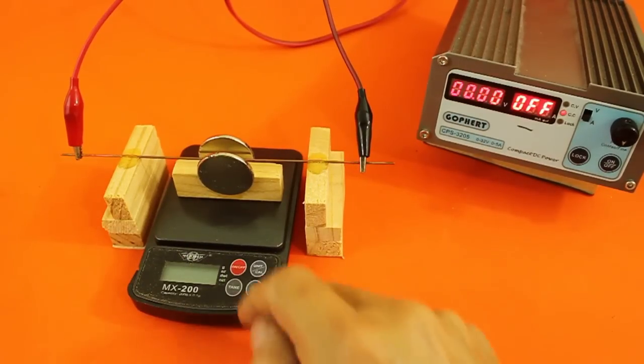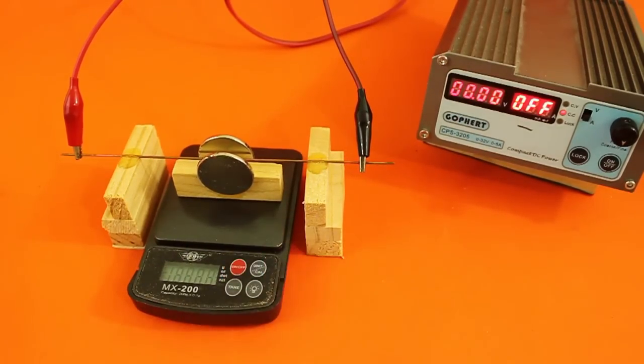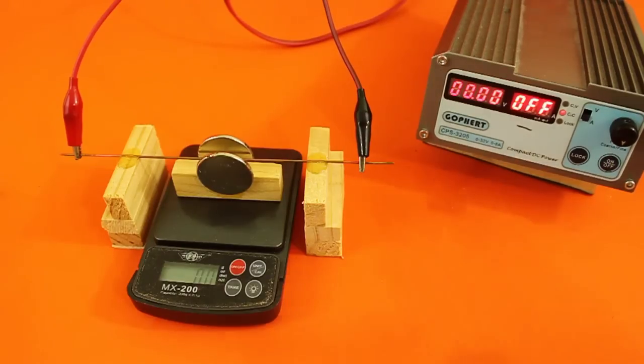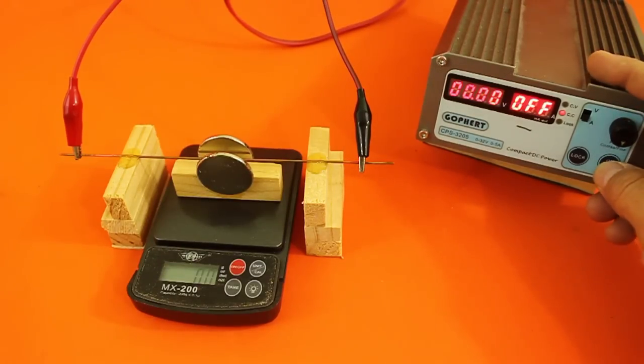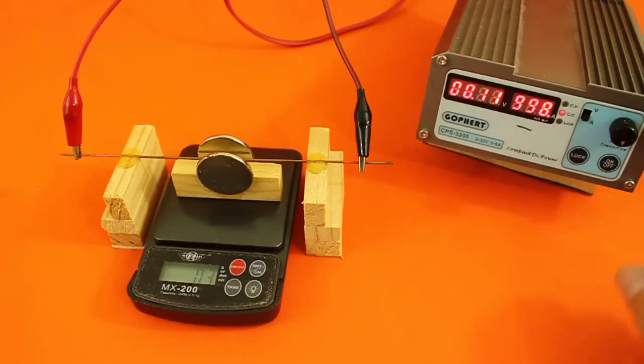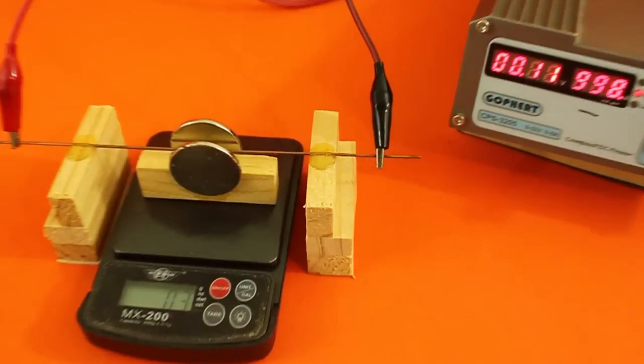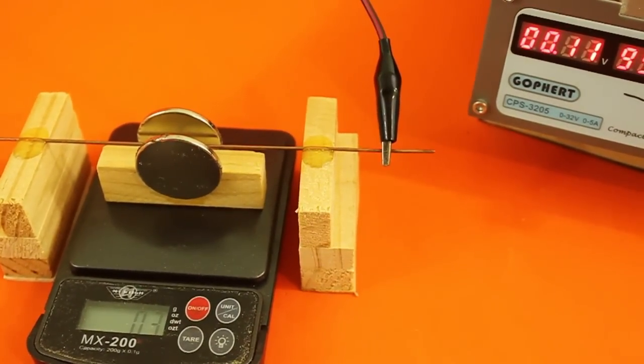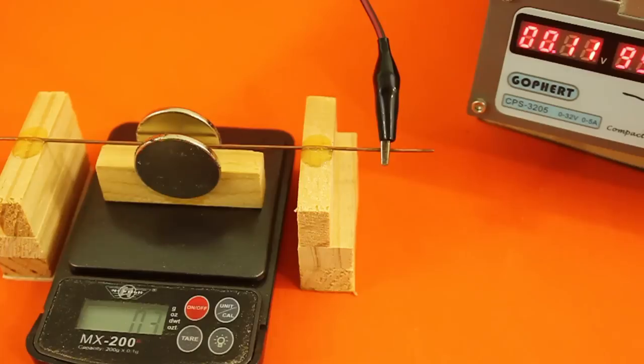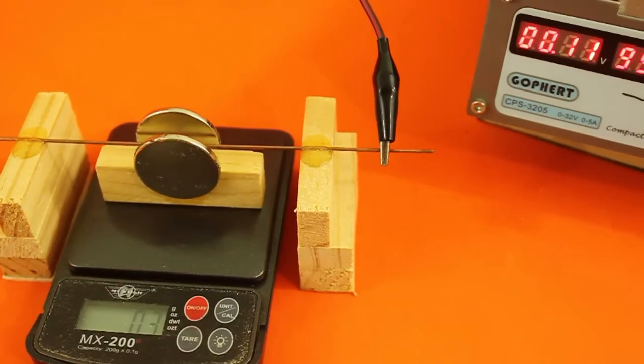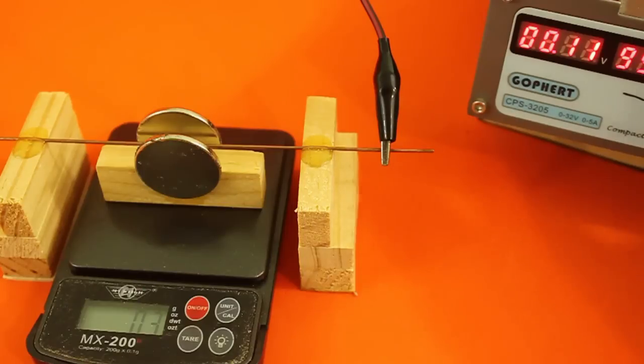I'm going to turn on the scale and also the power supply at one amp. And we can see how the scale registers an extra weight of 0.3 grams. If we now increase the current to 2 amps,